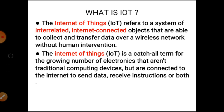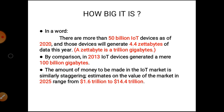Next, how big is it? In the world there are more than 50 billion IoT devices as of year 2020, and those devices will generate 4.4 zettabytes of data in this year. A zettabyte is a trillion gigabytes. By comparison, in 2013 IoT devices generated a mere 100 billion gigabytes.